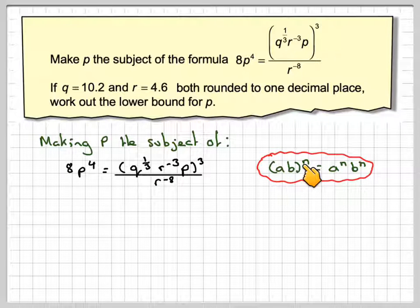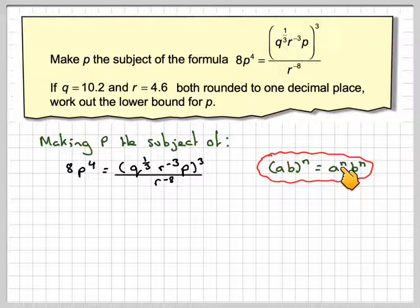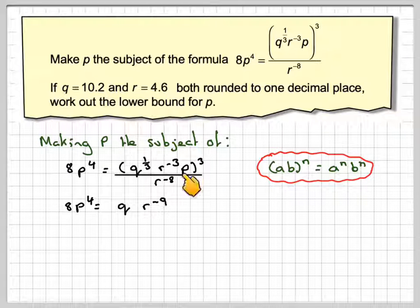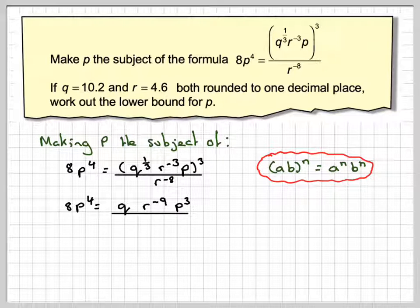If we have (AB)^N, that's the same as A^N * B^N. So applying that here, this becomes Q^(1/3) times 3, which is Q; R^(-3) times 3, which is R^(-9); and P cubed, over R^(-8).